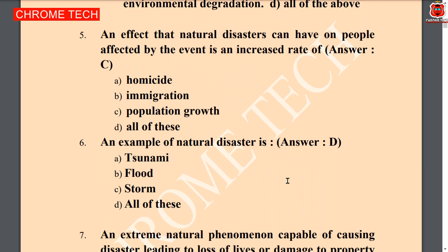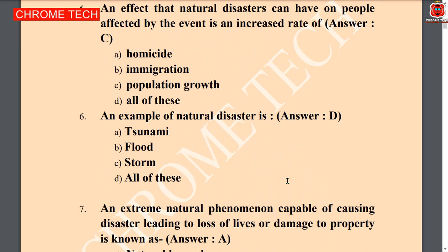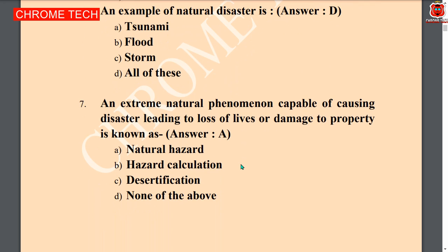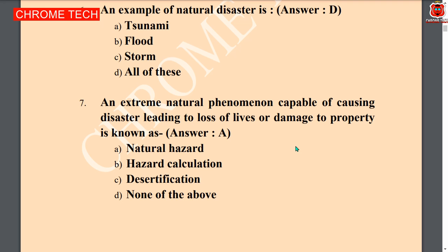Population growth is the correct answer. Next question: an example of a natural disaster is — tsunami, flood, storm — all answers are right, all of the above. Next question: an extreme natural phenomenon capable of causing disaster leading to loss of lives or damage to property is known as — natural assault. Natural assault is the correct answer.